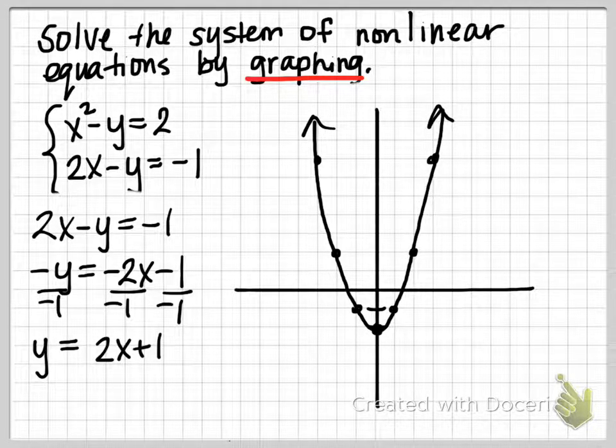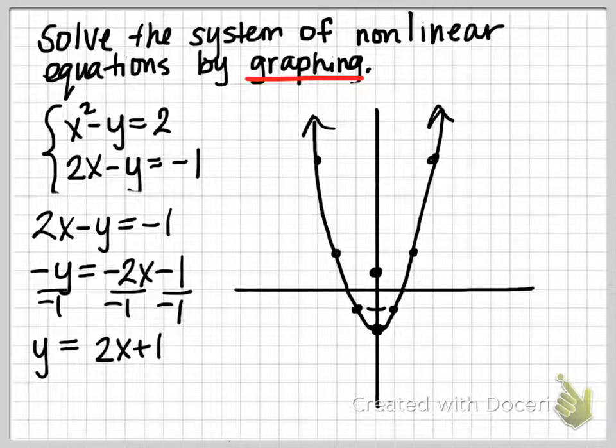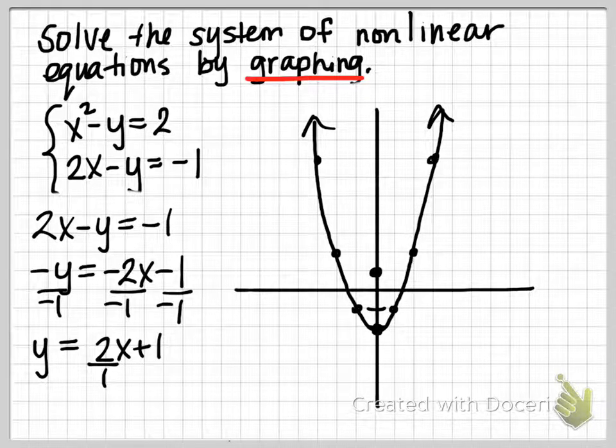So this is a line with a y-intercept of positive 1 and then a slope of 2, which is 2 over 1. So from our y-intercept, we'll travel up 2 right 1.